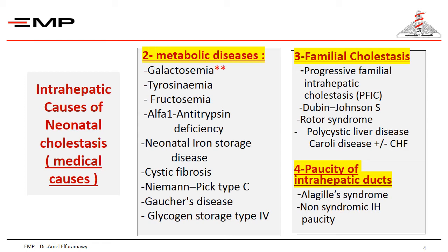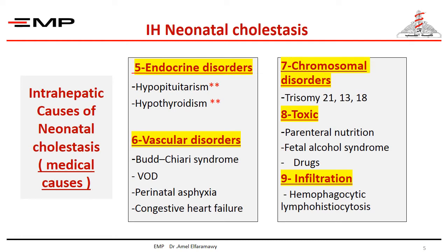A hint about familial cholestatic syndromes, which are inherited causes of cholestasis, and about paucity of interlobular bile ducts — meaning hypoplasia of bile ducts, whether syndromic as in Alagille syndrome or non-syndromic — will be given in the last segment. Hypothyroidism and hypopituitarism are very important to detect early as they are treatable with hormonal replacement. The Budd-Chiari syndrome and veno-occlusive disease are vascular causes. Chromosomal anomalies, drugs, total parenteral nutrition, and liver infiltration in hemophagocytic lymphohistiocytosis are all reported to cause neonatal cholestasis.